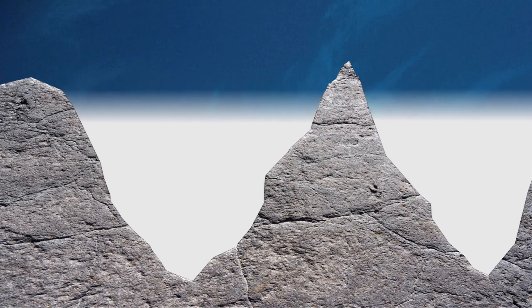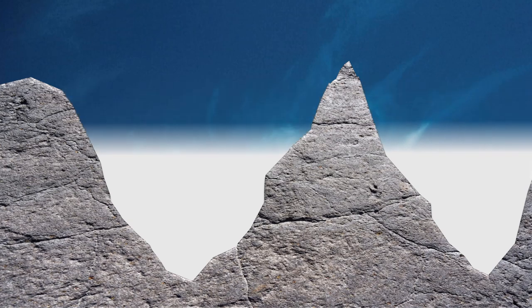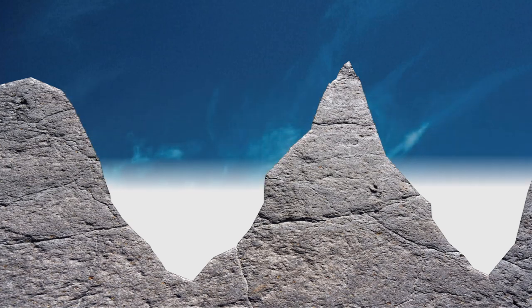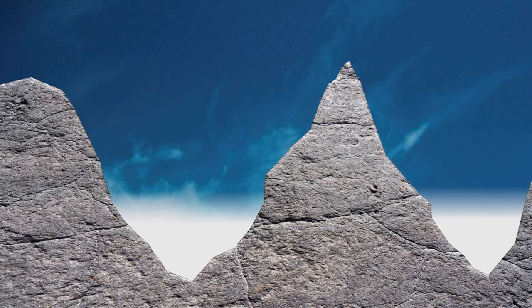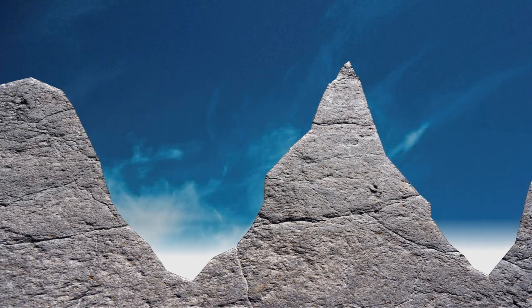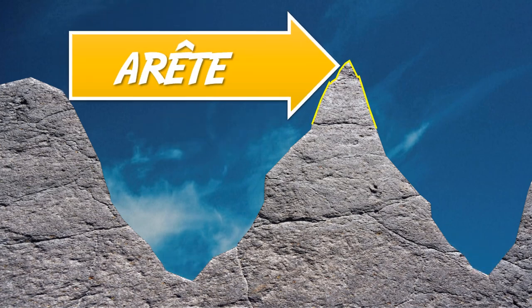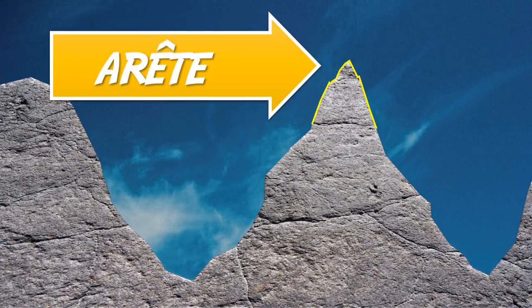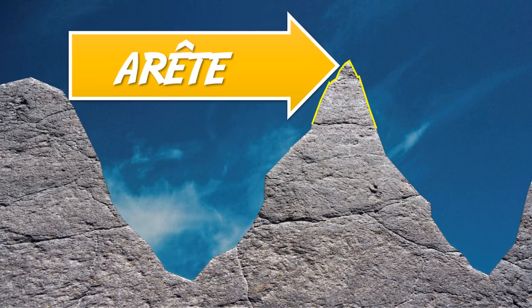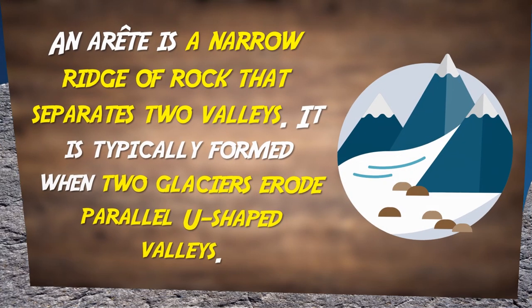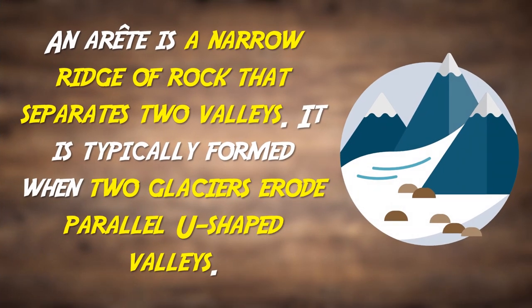Aretes come in when two glaciers carve these valleys side by side, or parallel to one another, leaving the thin, sharp peak of a mountain top. That pointy mountain peak is an arete. Thus, an arete is a narrow ridge of rock that separates two valleys.